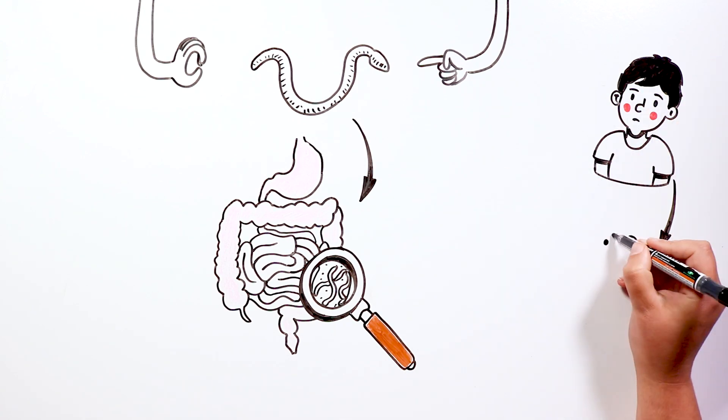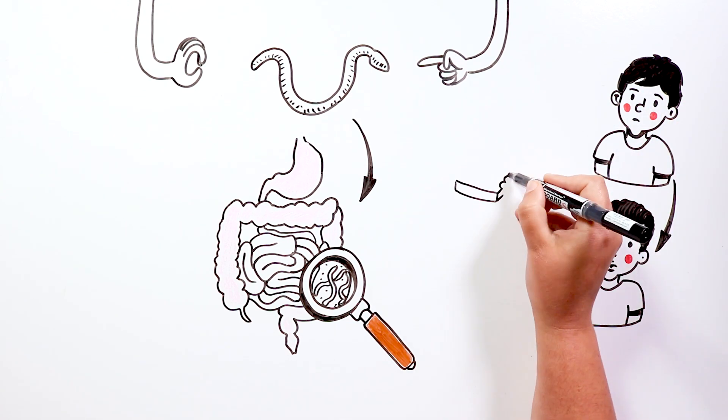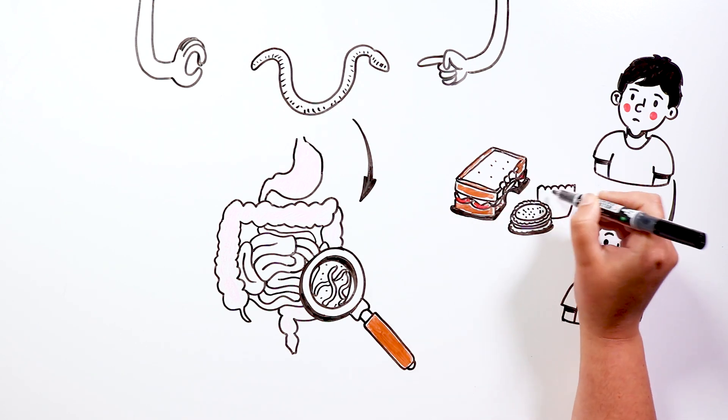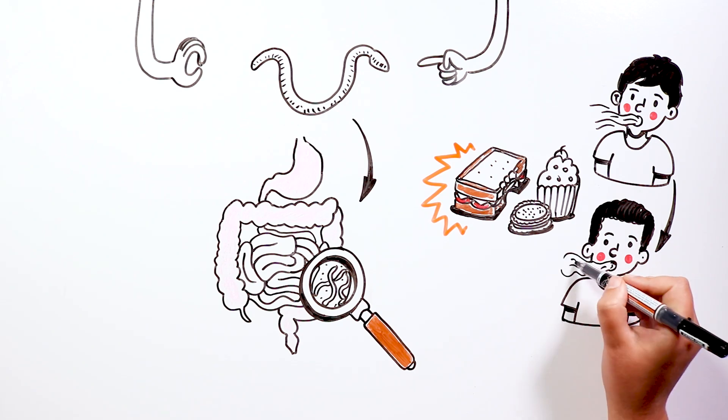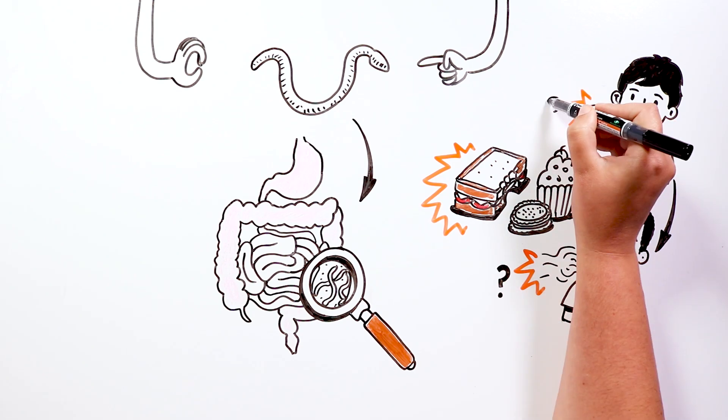Pinworms are spread from person to person, usually by eating food that has been in contact with hands or objects contaminated with the parasite's eggs. It is said that the eggs can also be inhaled through the air, although this is much more rare.